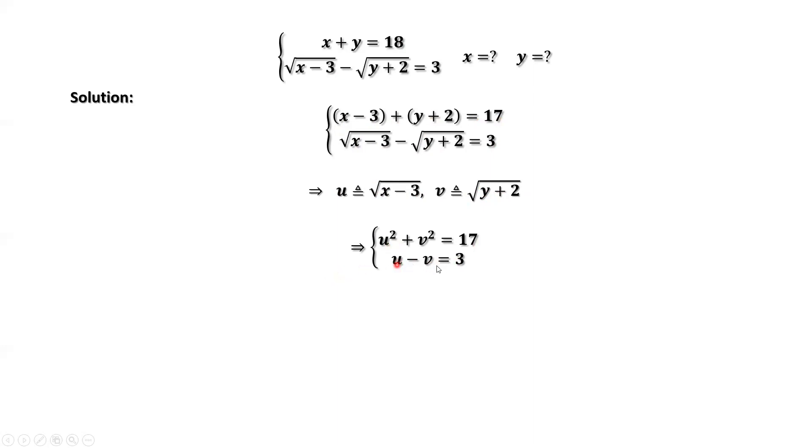From the second equation, we have v equals u minus 3. From the first equation, we can replace v by u minus 3 to have a one variable equation.